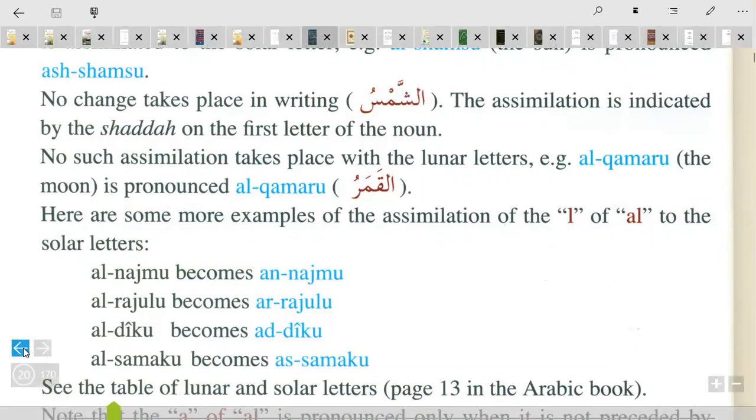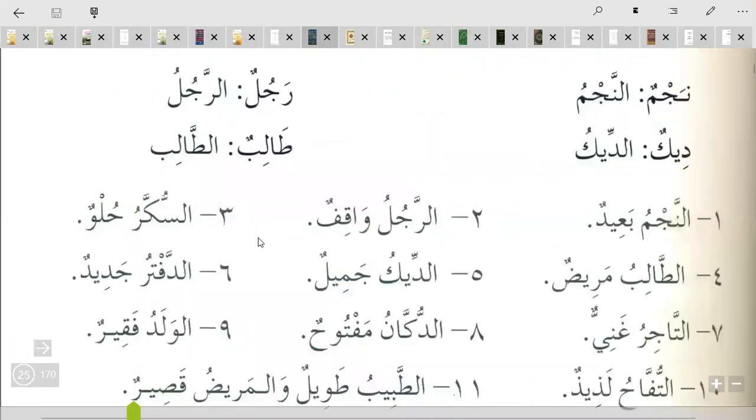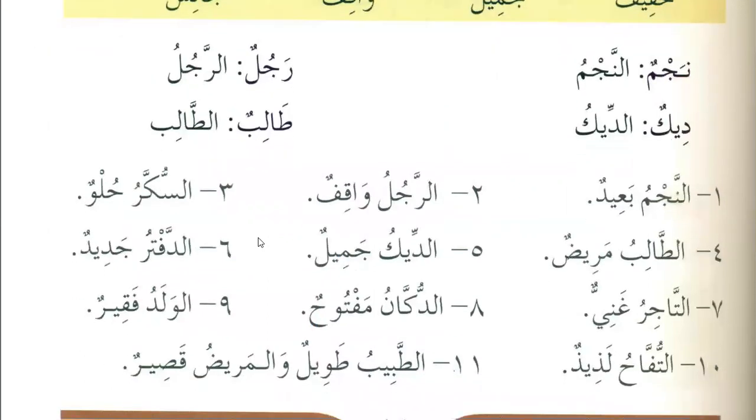Basically, just telling a very simple point: in Huroof Qamariyya we pronounce the Lam, and in Huroof Shamsiyya we do not pronounce the Lam — Lam will be silent. So in simpler words, whenever you see this Shadda, this Shadda means the Lam is silent.